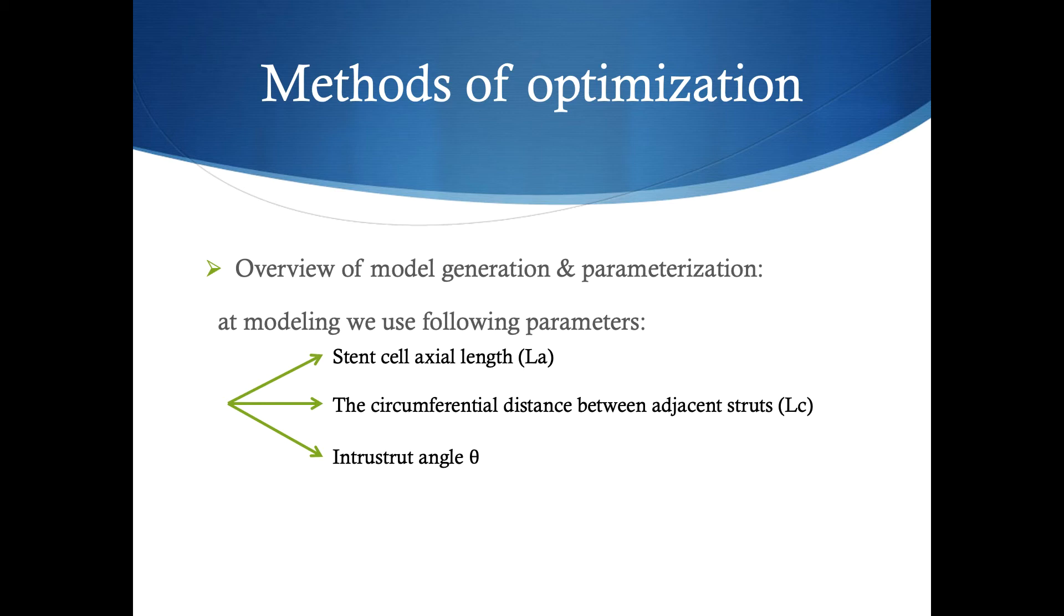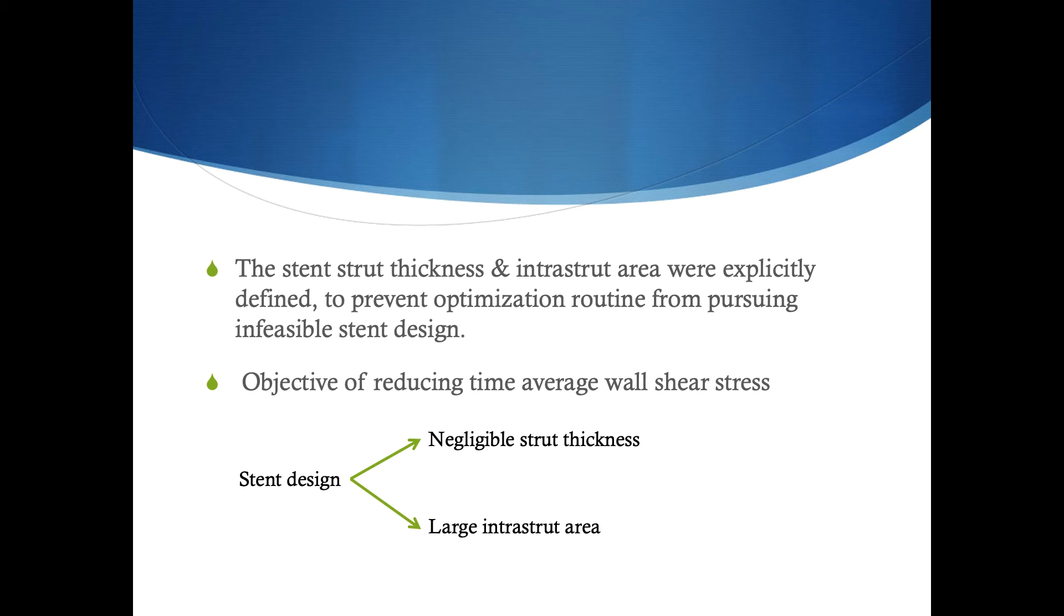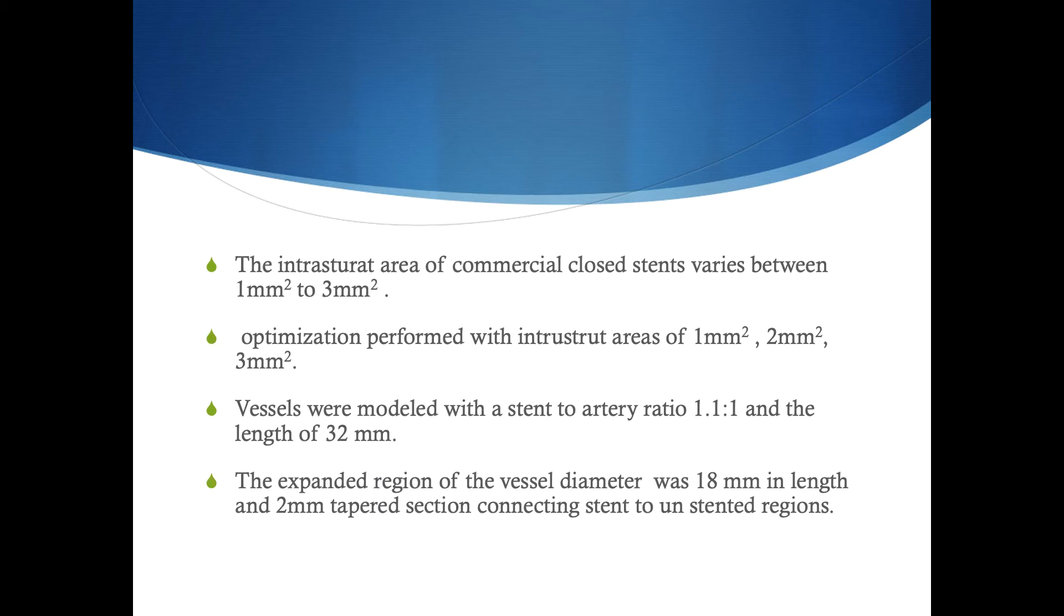The modeling uses the following methods: the stent cell length, the circumferential distance between adjacent struts, and strut angle. Negligible strut thickness and large intra-strut areas will control and reduce time-averaged wall shear stress. For achieving desired goals, we should change the thickness of the walls from one millimeter squared to three millimeter squared. The vessels are modeled with stent-artery ratios of 1.1:1 and length of 32 millimeters. The expanded region of vessel diameter was 18 millimeters in length, and two millimeter tapered sections connect stent to unstented regions.